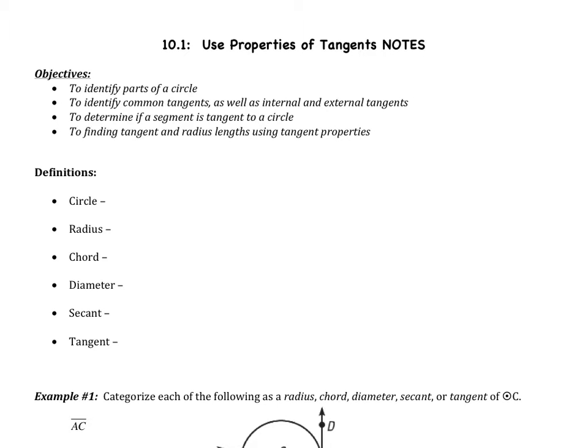Hello, ladies and gentlemen. Welcome to the first video of Chapter 10, which is Section 10.1, Use Properties of Tangents. Chapter 10 is all about circles. We're going to be learning a lot of definitions, formulas, and theorems, and then apply them. Section 1 is the background on circles. Our objectives are to identify parts of a circle, identify common tangents, determine if a segment is tangent to a circle, and find tangent and radius lengths using tangent properties.